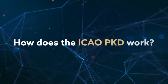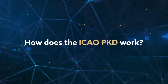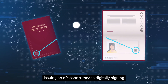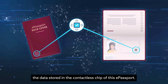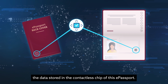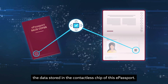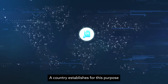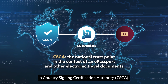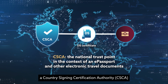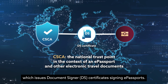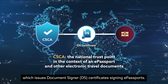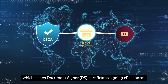How does the ICAO PKD work? Issuing an e-passport means digitally signing the data stored in the contactless chip of the e-passport. A country establishes for this purpose a Country Signing Certification Authority, which issues Document Signer (DS) certificates for signing e-passports.